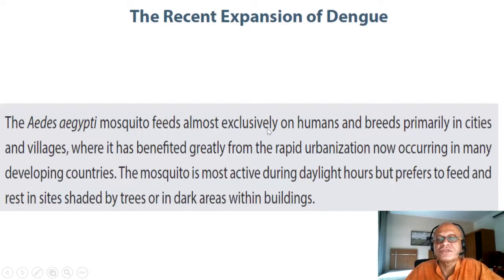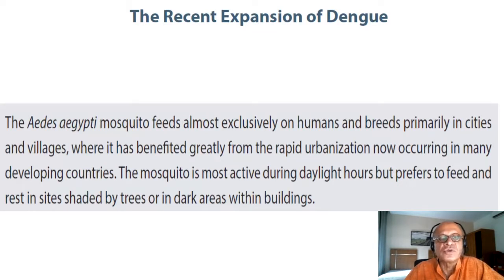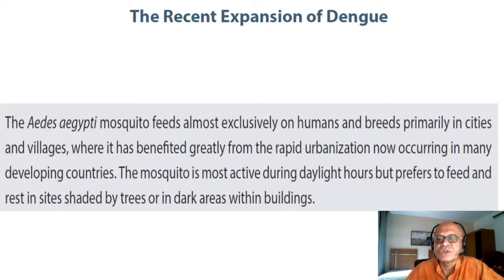The Aedes aegypti mosquito feeds almost exclusively on humans and breeds primarily in cities and villages. At some point it adapted to human habitations and human blood, and has benefited greatly from rapid urbanization now occurring in many developing countries. The mosquito is most active during daylight hours.